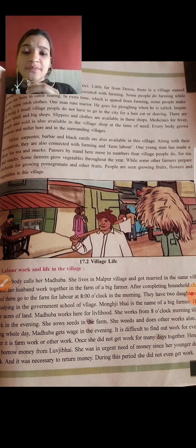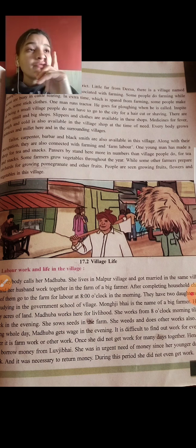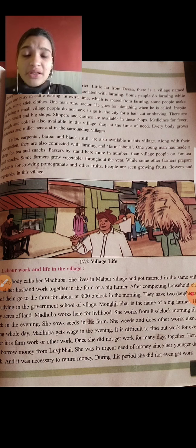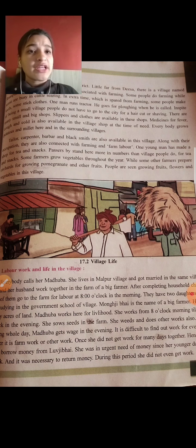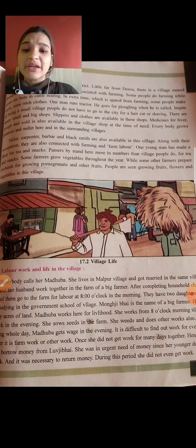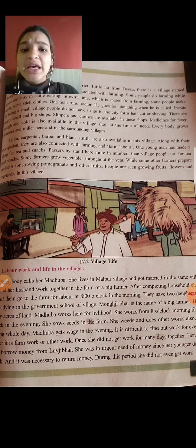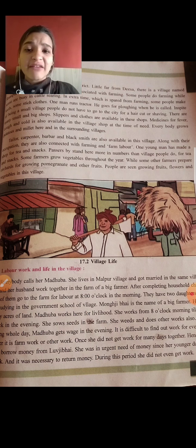Some farmers grow vegetables throughout the year, while others grow only seasonally — for example, growing mango in mango season. Some people are also preparing orchards for growing pomegranate and other fruits. So in this village, people are seen growing fruits, flowers, and vegetables throughout the year, both permanently and seasonally.